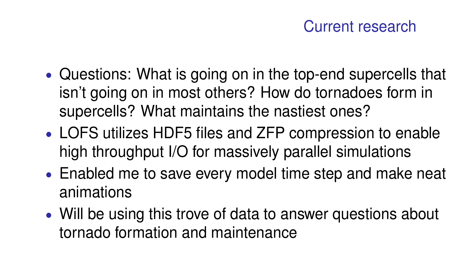What I've been working on these past couple of years: the big one is supercells and tornadoes. The main questions are: what's going on in top-end supercells that isn't going on in most others? How do tornadoes form — the question of tornado genesis, where there are a couple of theories but what we're seeing in our simulation is something new. And what maintains the big long-track EF5-type tornadoes? From my perspective, genesis and maintenance are really all part of the same basic process.